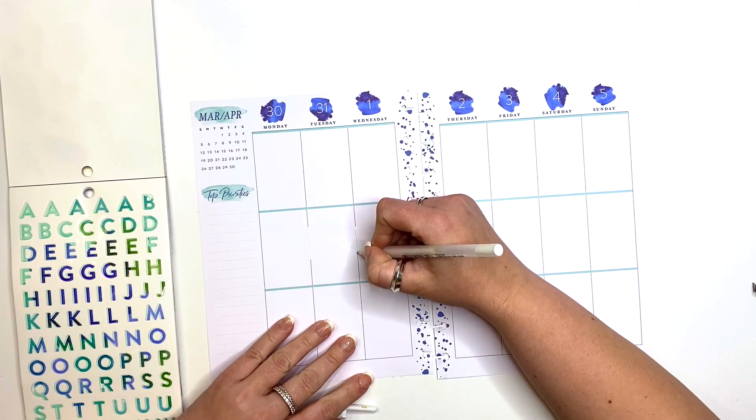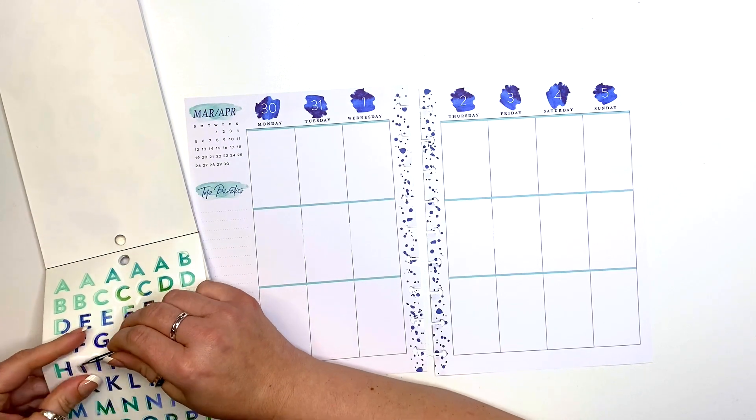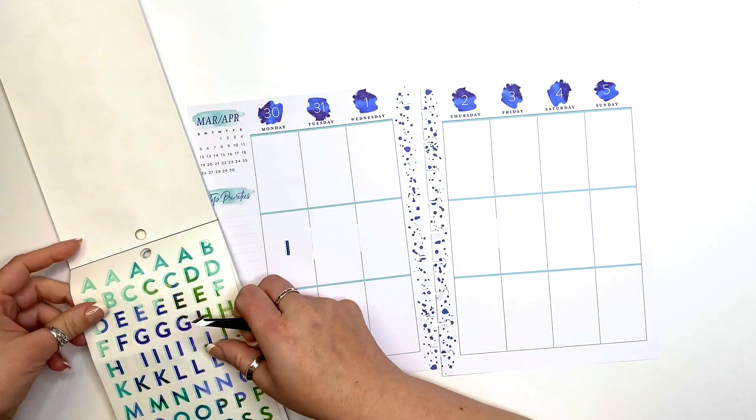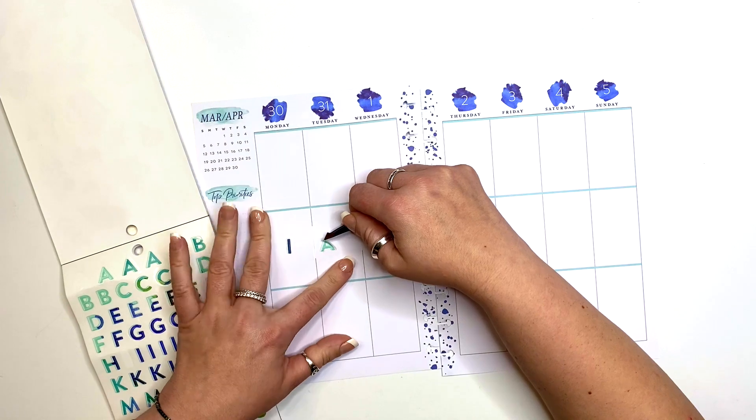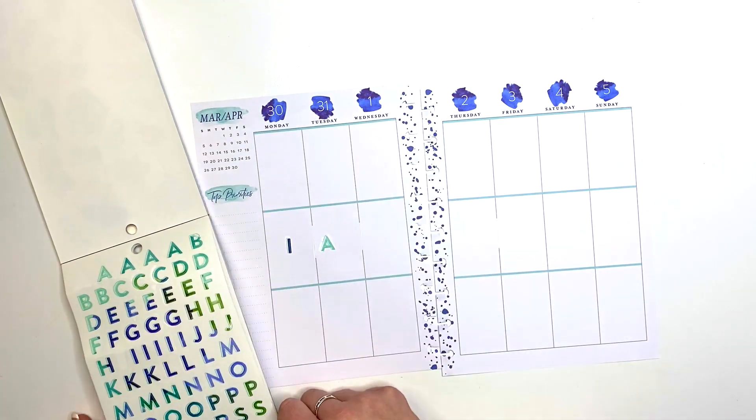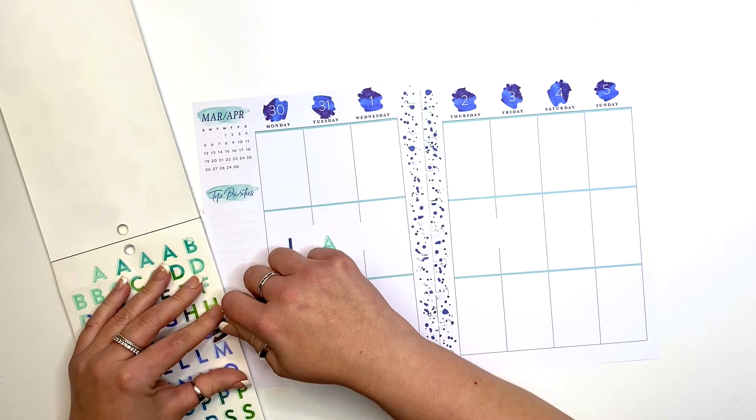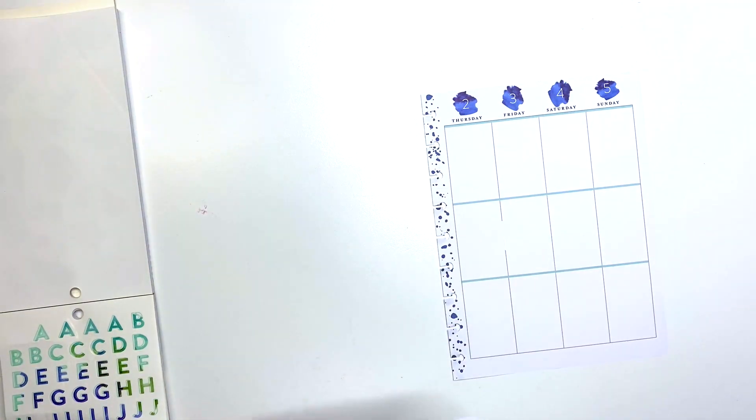I'm going to be using the spring sticker book because I like the colors of the letters up there. I'm going to spell out I am in control on my pages. I'm not going to be using any more stickers out of that book except those letters. I really do like them and I like that they're clear too, so they have this sheen to them.